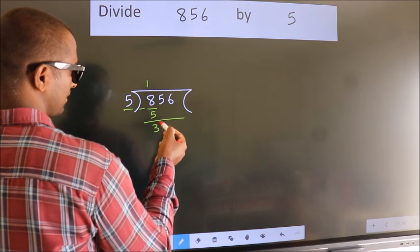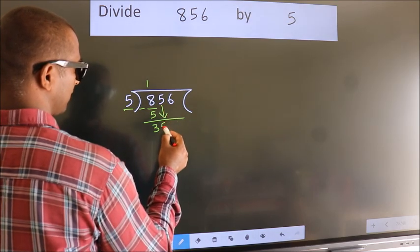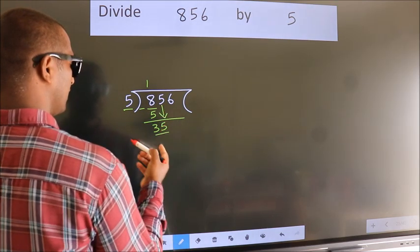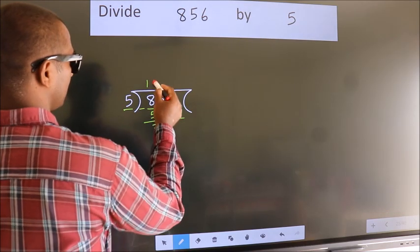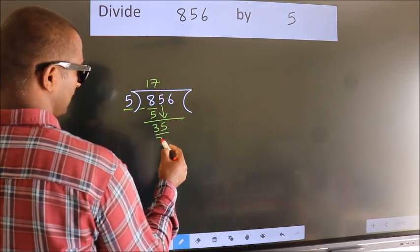After this, bring down the beside number. So 5 down. So 35. When do we get 35? In 5 table, 5 7s, 35.